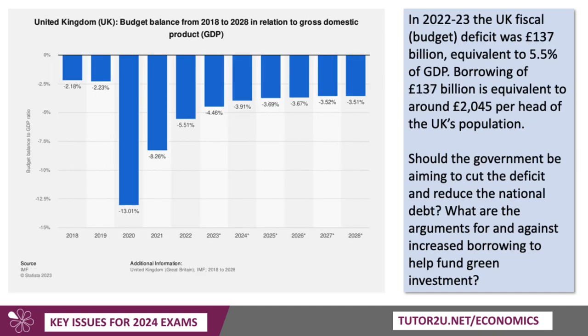Fiscal policy — we've mentioned tax, but what about how much the government is borrowing? Last year the UK budget deficit, or fiscal deficit, was about £137 billion, which was 5.5% of GDP — about £2,000 per head of the population. The government is borrowing huge sums yet again. The deficit is forecast to fall, but it'll still be over 3% of GDP. The economics here: should the UK government be aiming to cut the deficit so quickly? Is the government right to include cutting the debt as one of its objectives? And what are the arguments for and against increasing borrowing to help fund green investment, for example? These are all major topical issues.